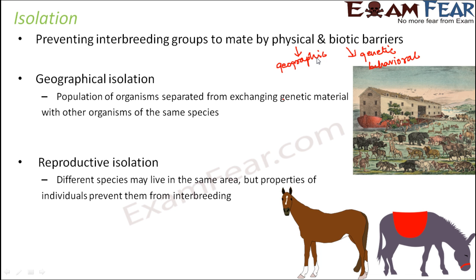Under reproductive isolation, one type is seasonal isolation. Seasonal isolation means that certain organisms mate in a particular season, while other organisms do not mate in that particular season. So obviously those two organisms cannot mate with each other — that is seasonal isolation.